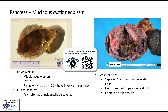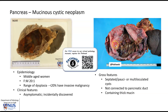There is a separate video describing the gross pathological features of mucinous cystic neoplasm. Usually we would see a multi-loculated cyst, which is not connected to the pancreatic ductal system. When intact, the cyst locules will contain thick viscous mucin. There can sometimes be papillary or solid areas in the cyst locules, and these must be carefully sampled to look for invasive adenocarcinoma.